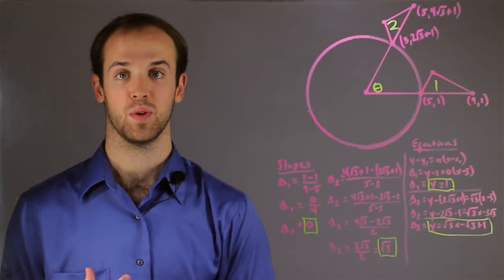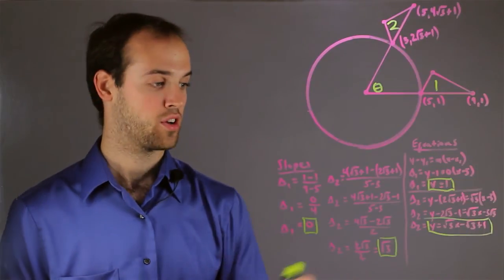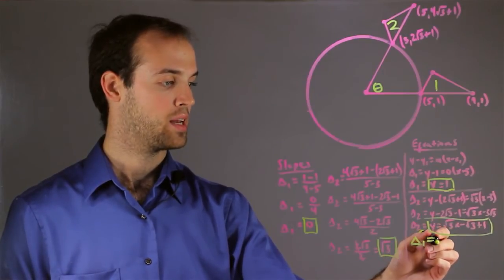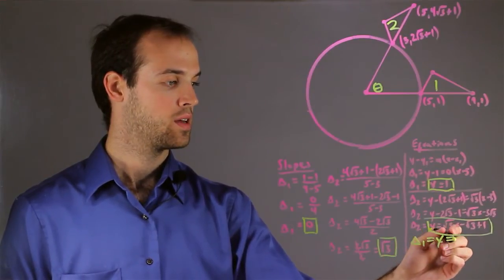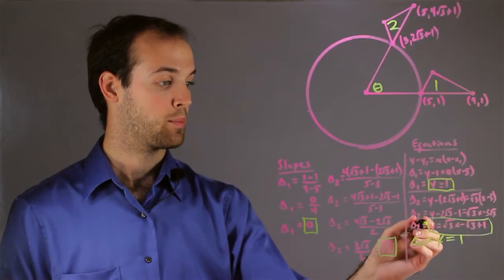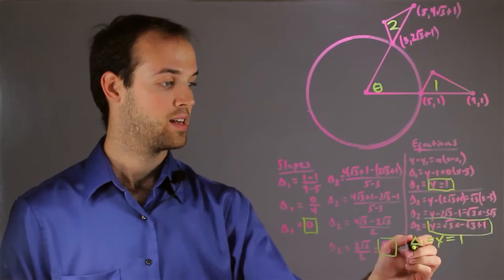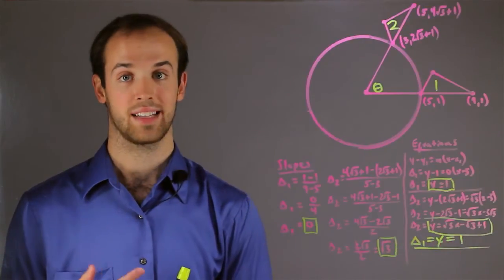And from there, all I'm going to do is set them equal to each other, or excuse me, I'm going to put them under each other, and I'm going to solve by elimination. So again, I'm going to put triangle 2's line right above triangle 1's line, and I'm literally going to subtract out everything.